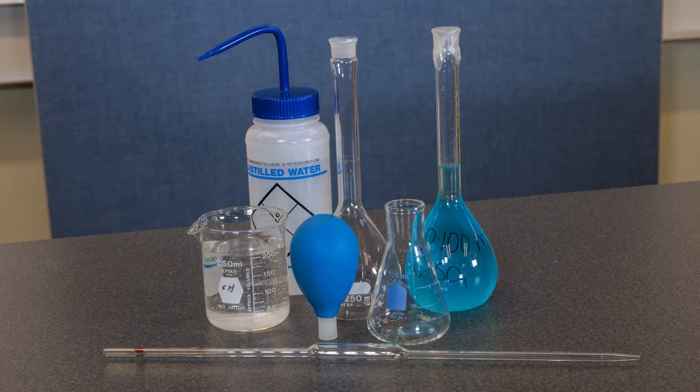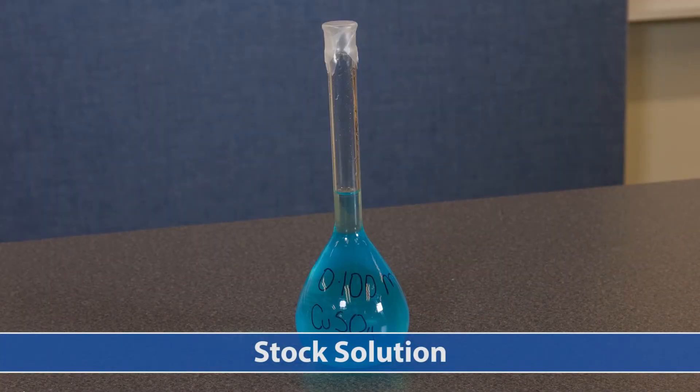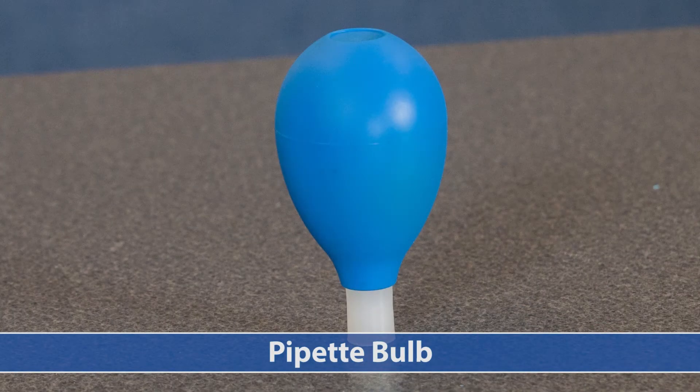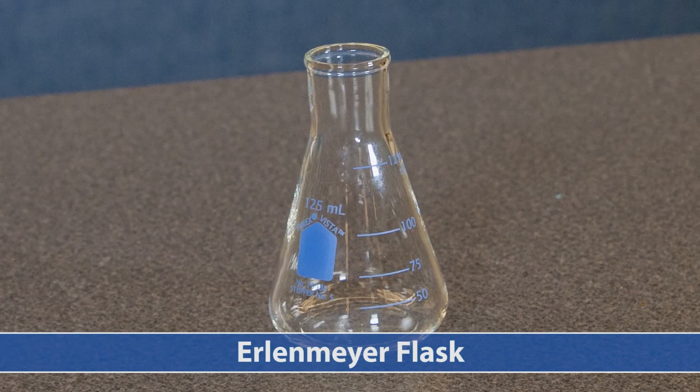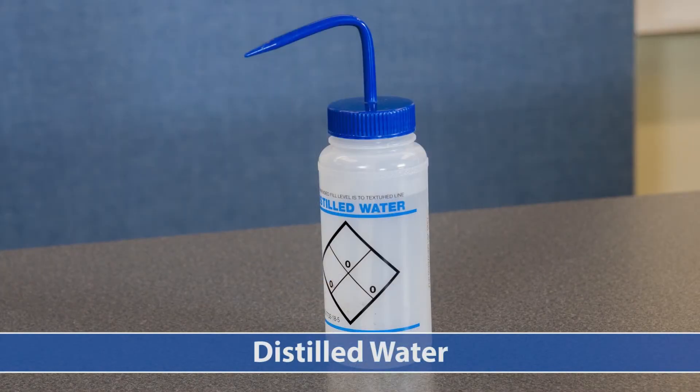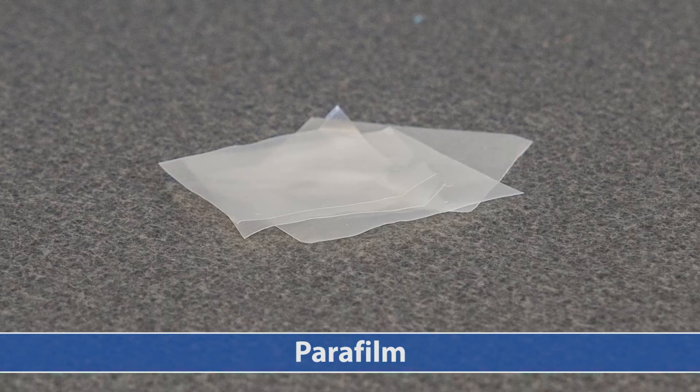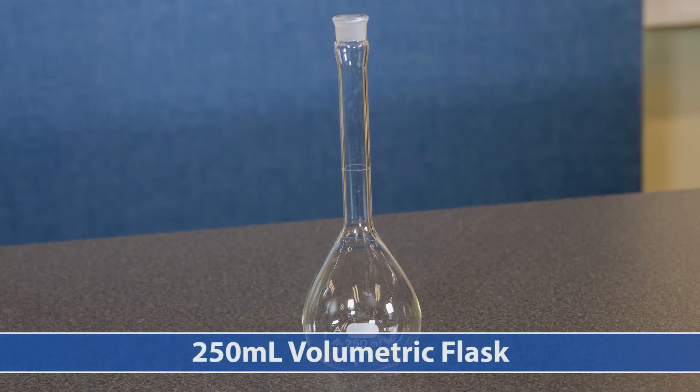To prepare the dilution, we will need the following material: stock solution, a 10 ml pipette, pipette bulb, Erlenmeyer flask, distilled water, disposable pipette, parafilm and a volumetric flask.